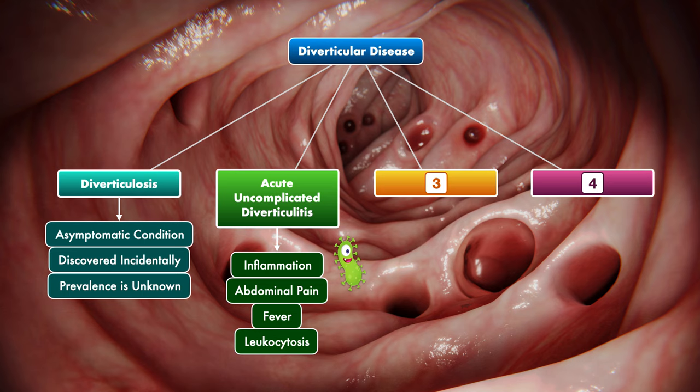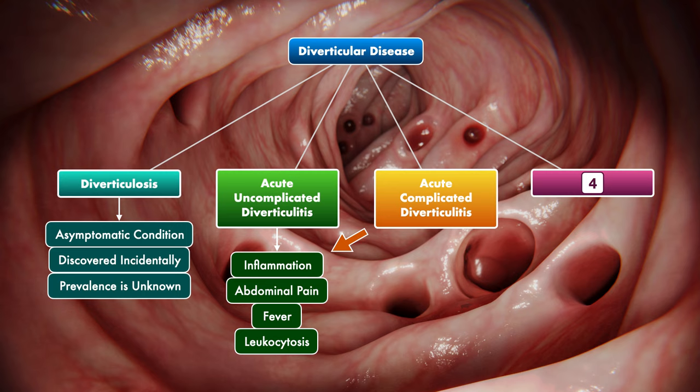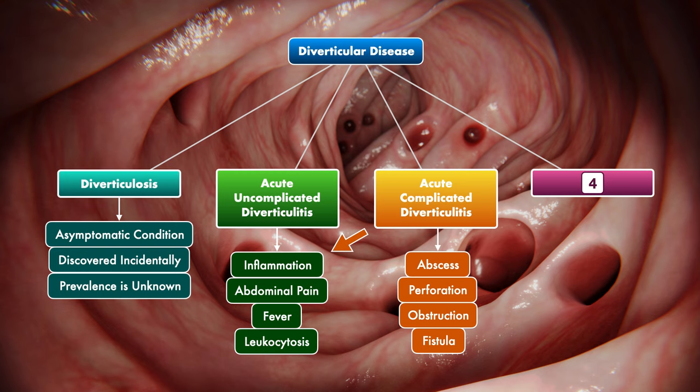Third, we have acute complicated diverticulitis. The signs and symptoms align with those of acute uncomplicated diverticulitis, but it's distinguished by the presence of an abscess, perforation, obstruction, or fistula, and is therefore considered to be much more of a threat. Complicated diverticulitis sometimes results in the need for surgery, and in its most severe form, it can be fatal.